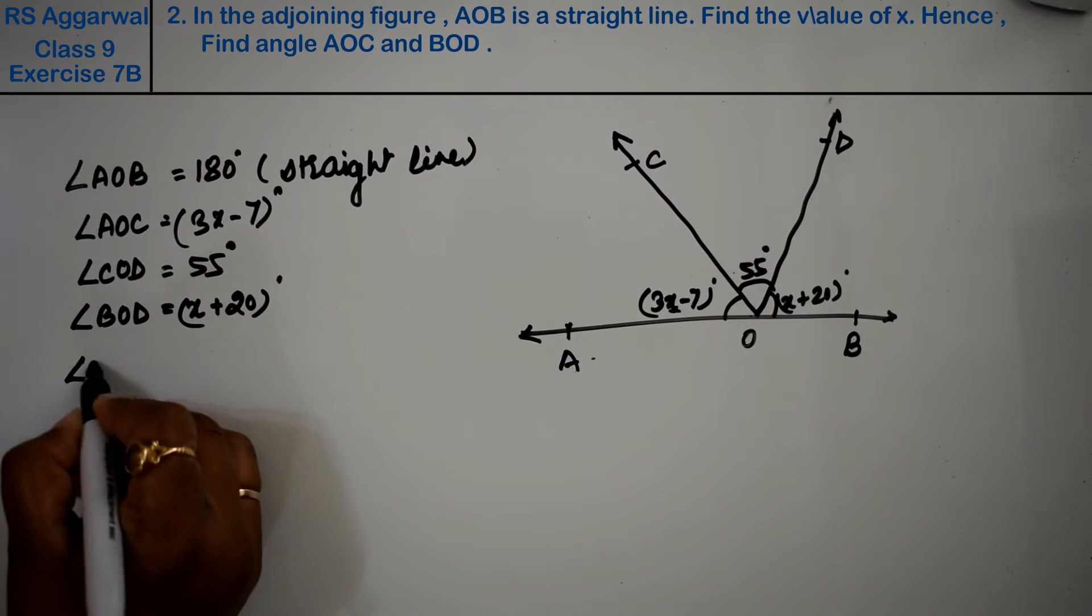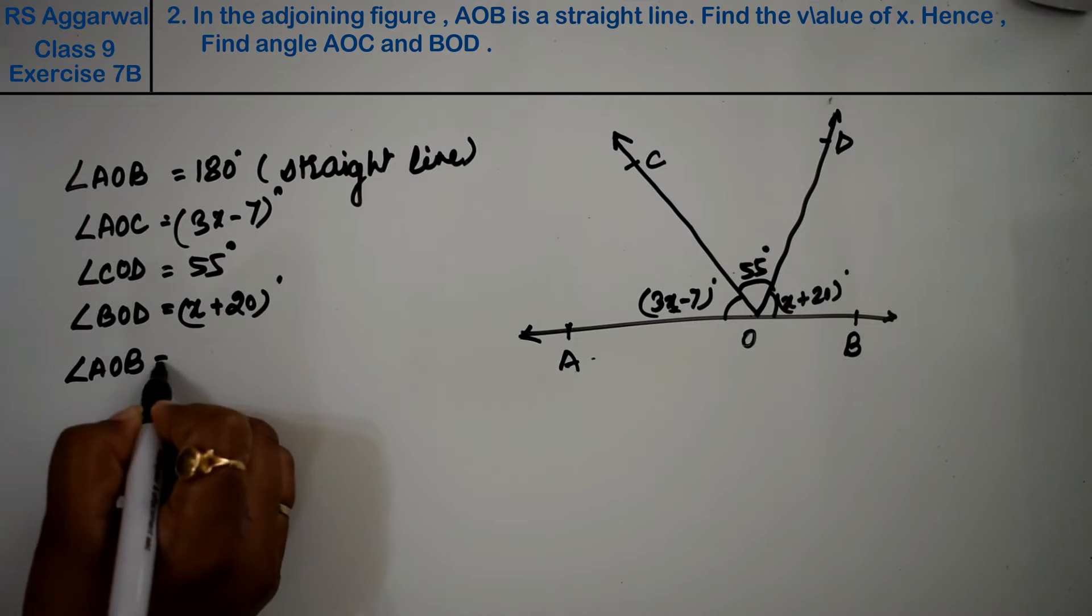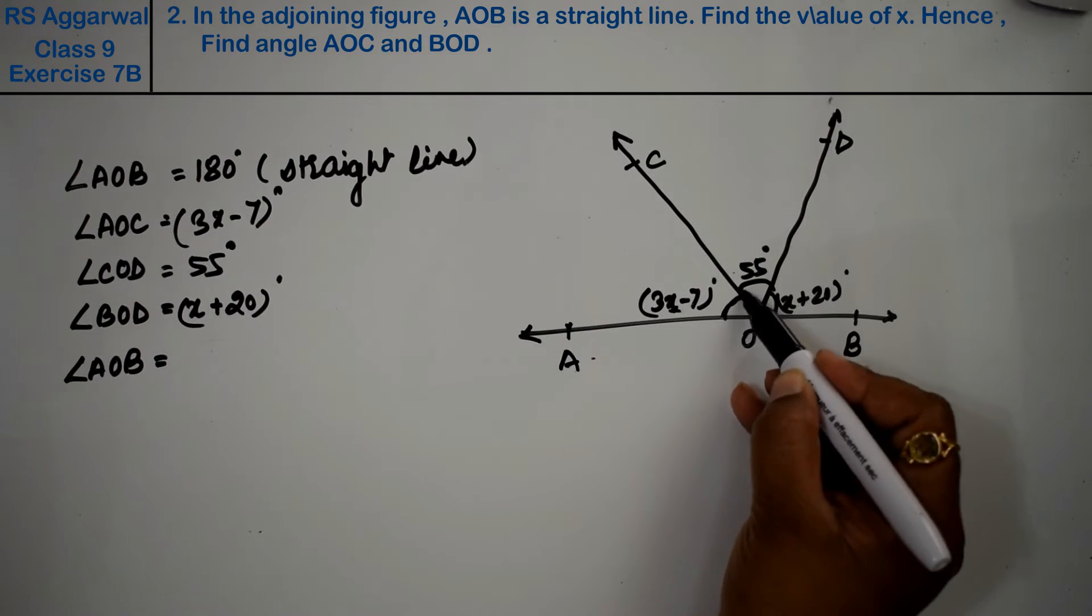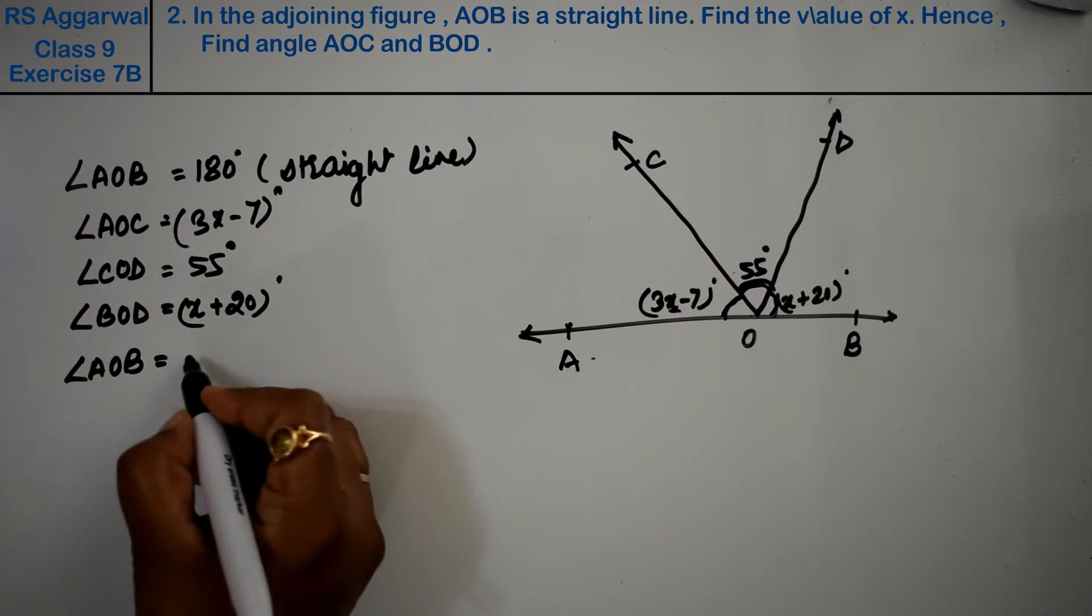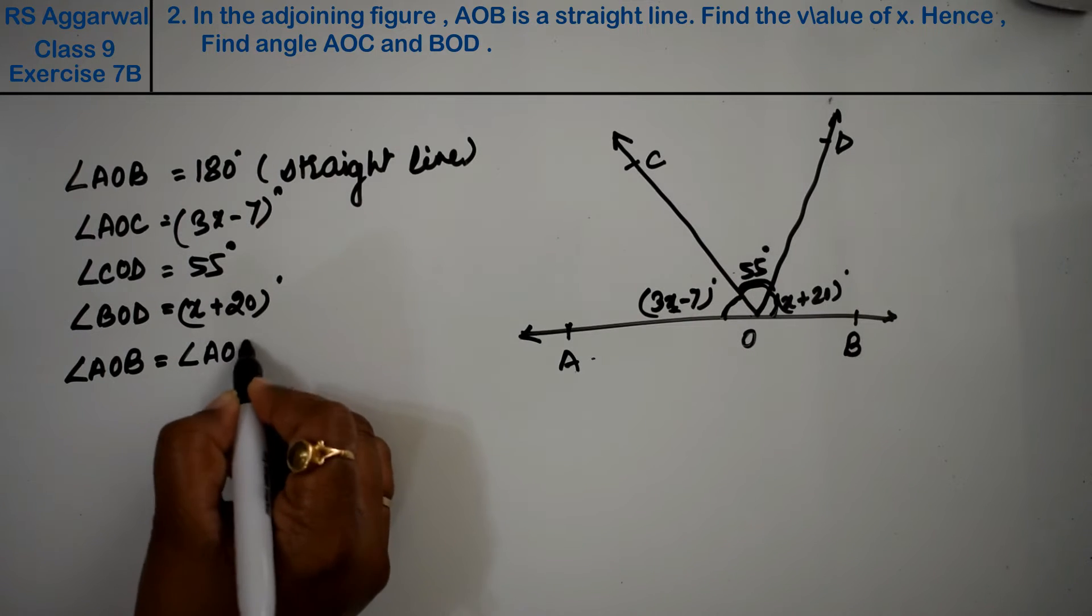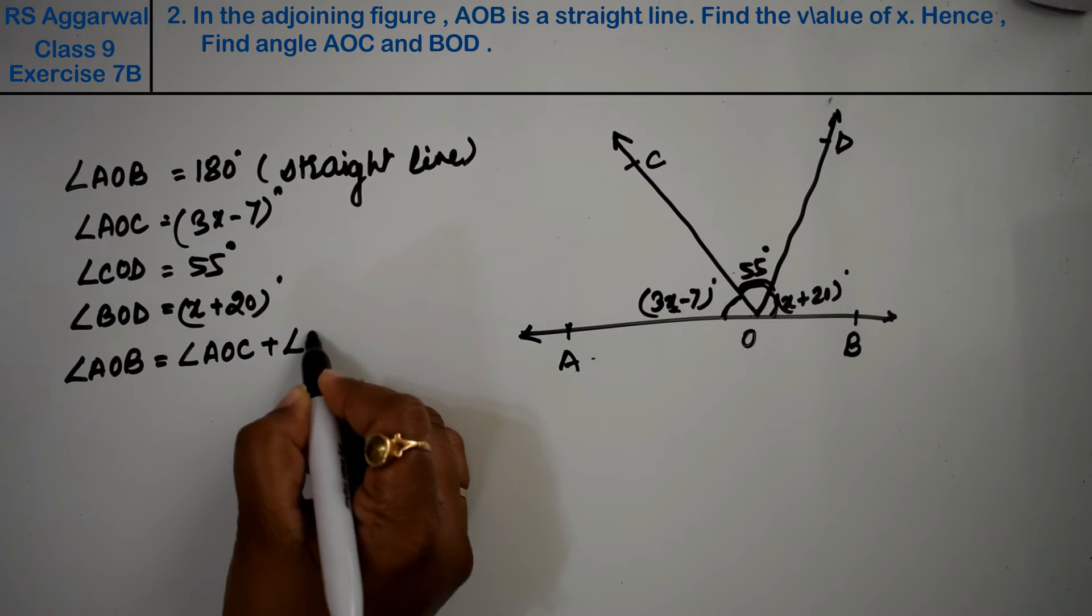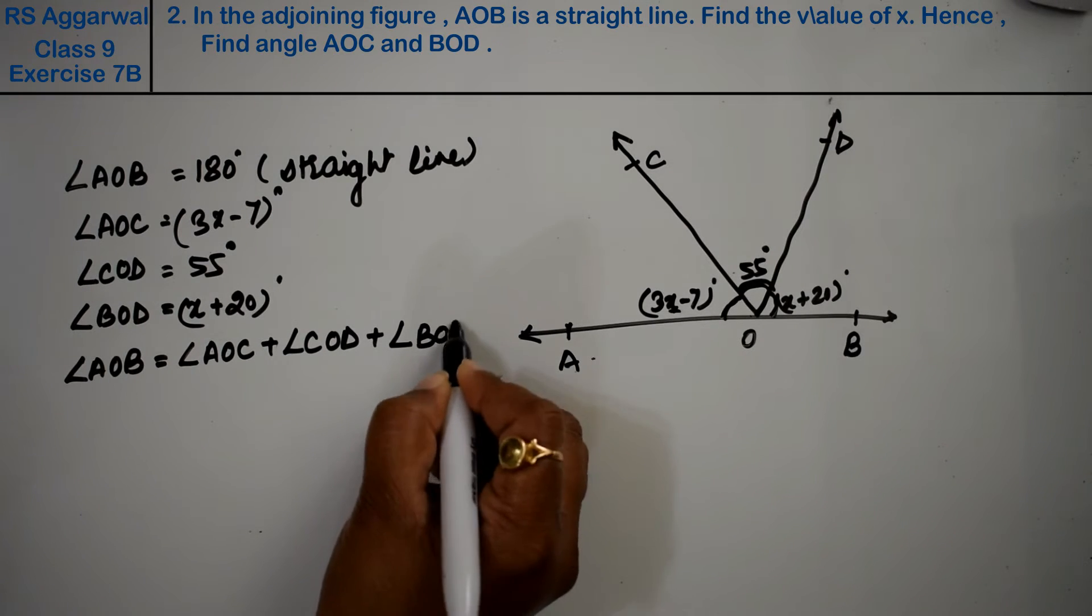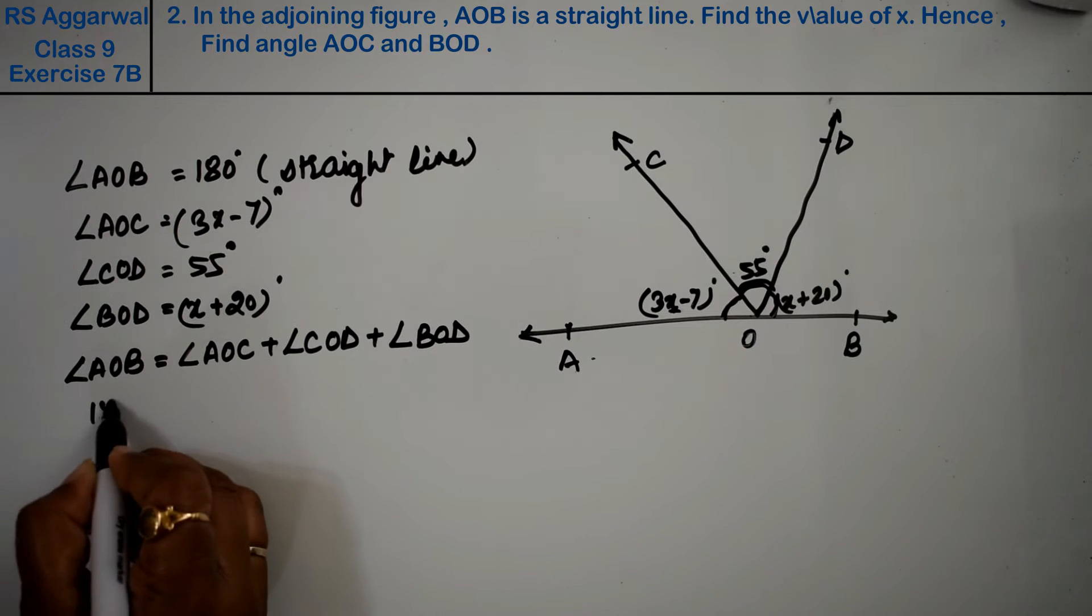Now angle AOB, this whole straight line is made up of this angle plus this angle plus this angle. Angle AOC plus angle COD plus angle BOD. This equals 180 degrees.